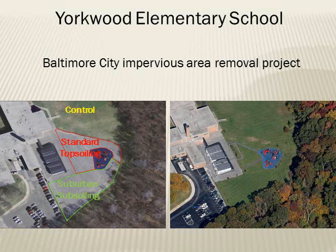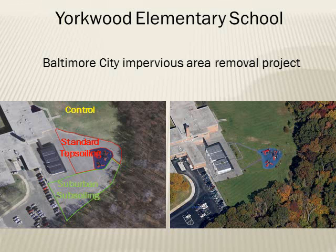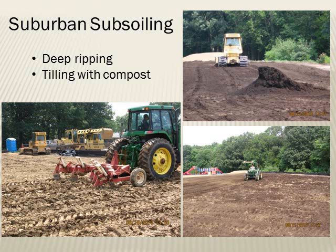This is a public school in northeast Baltimore that was removing its asphalt playground, as you can see in the before and after photos. We found this site particularly interesting because stormwater credits are issued for the removal of impervious area without any investigation into the resulting change in hydrologic function. This was a great opportunity for us to partner with Bill Stack and the City of Baltimore to demonstrate our soil decompaction and amendment techniques. The area outlined in red received the city standard specification for topsoiling, while the area outlined in green received our suburban subsoiling treatment. This baseball field to the north was never paved over and left relatively undisturbed, so we used it as a reference condition to compare to other fields.